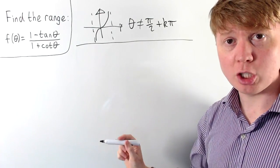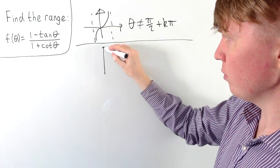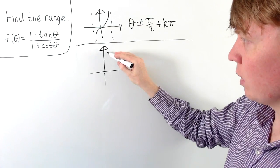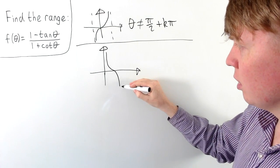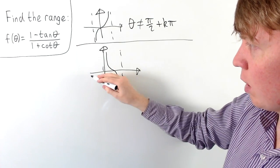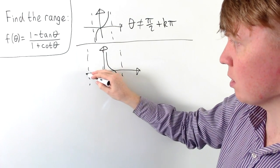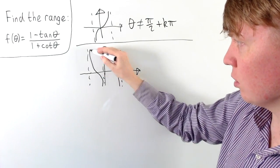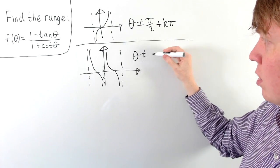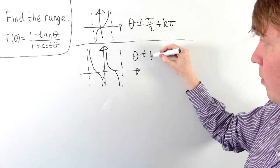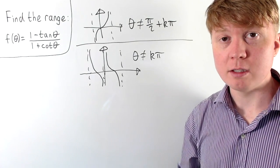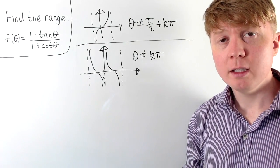Similarly for cot theta, we get slightly different values of theta which aren't going to give us a well defined function. Cot theta has asymptotes at π, zero, and -π — similar to tan but shifted along. So we also have to exclude theta can't be equal to any integer multiple of π, where again the integer k could be negative.